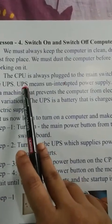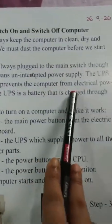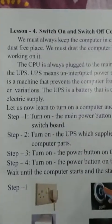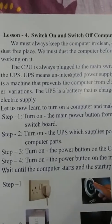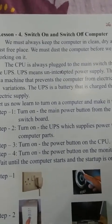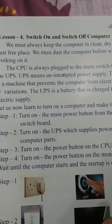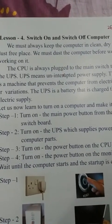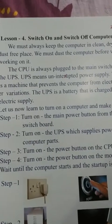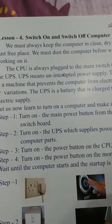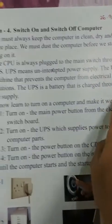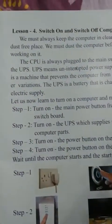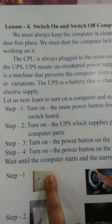UPS means uninterrupted power supply. What is the full form of UPS? Uninterrupted power supply. The UPS is a machine that prevents the computer from electrical power variations — voltage up-down. Sheta jantye na hai. CPU is always connected to UPS. The UPS is a battery that is charged through electrical supply.